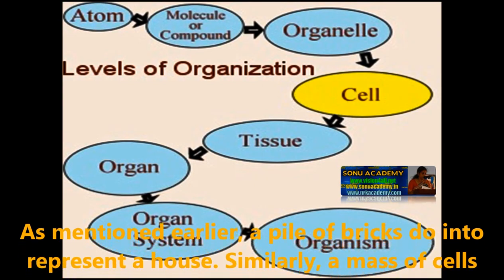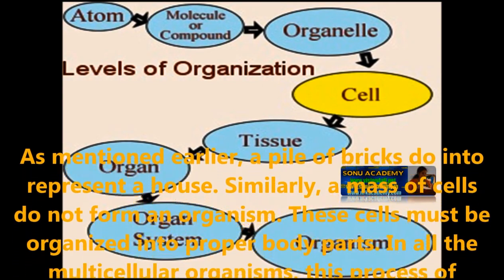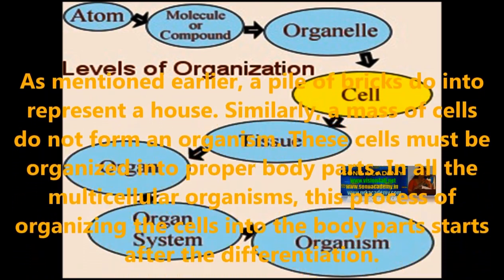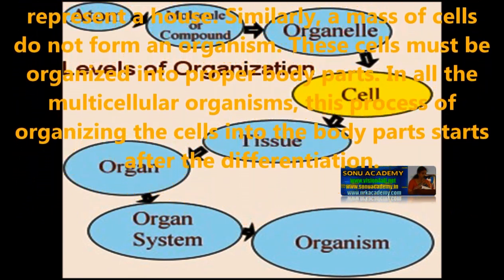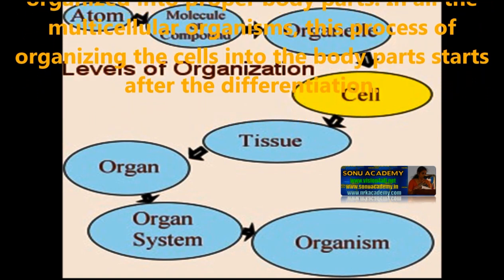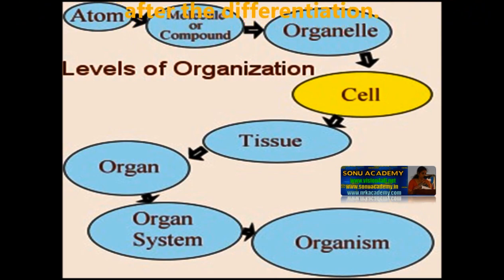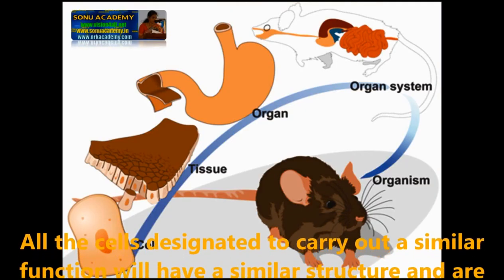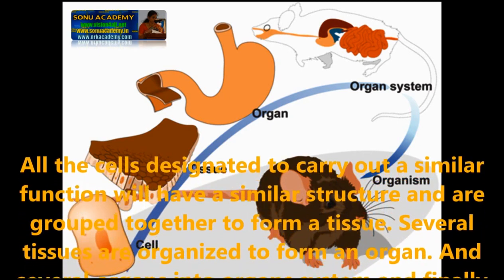Children, as mentioned earlier, a pile of bricks does not represent a house. Similarly, a mass of cells does not form an organism. These cells must be organized into proper parts of a body. In all multicellular organisms, this process of organization of cells into body parts starts after differentiation. All the cells designated to carry out a similar function will have similar structure and are grouped together to form a tissue.